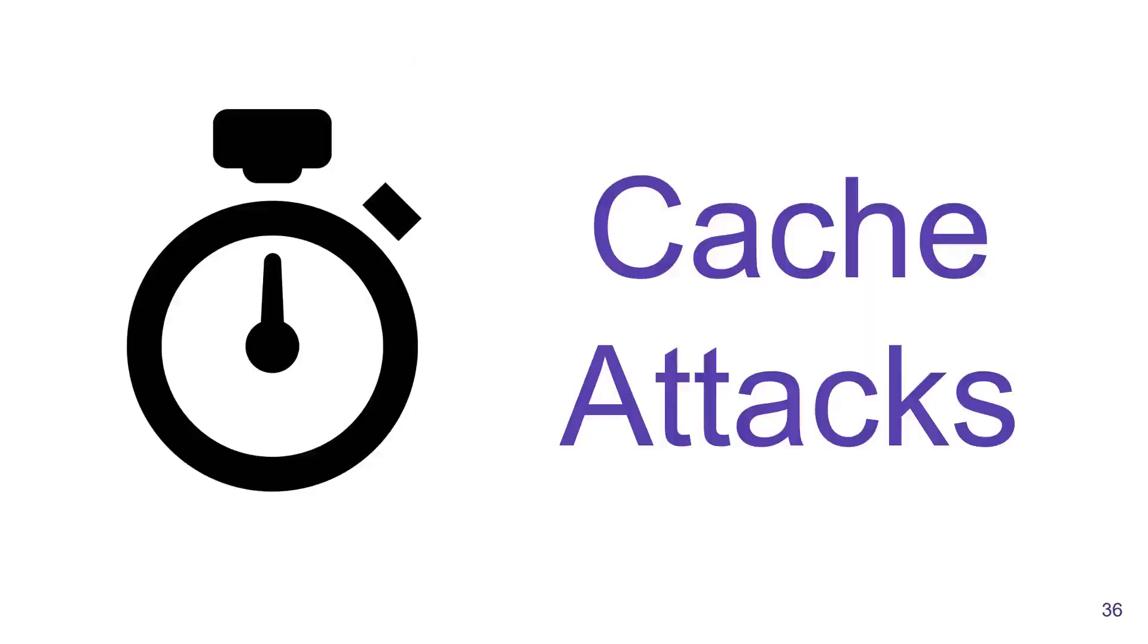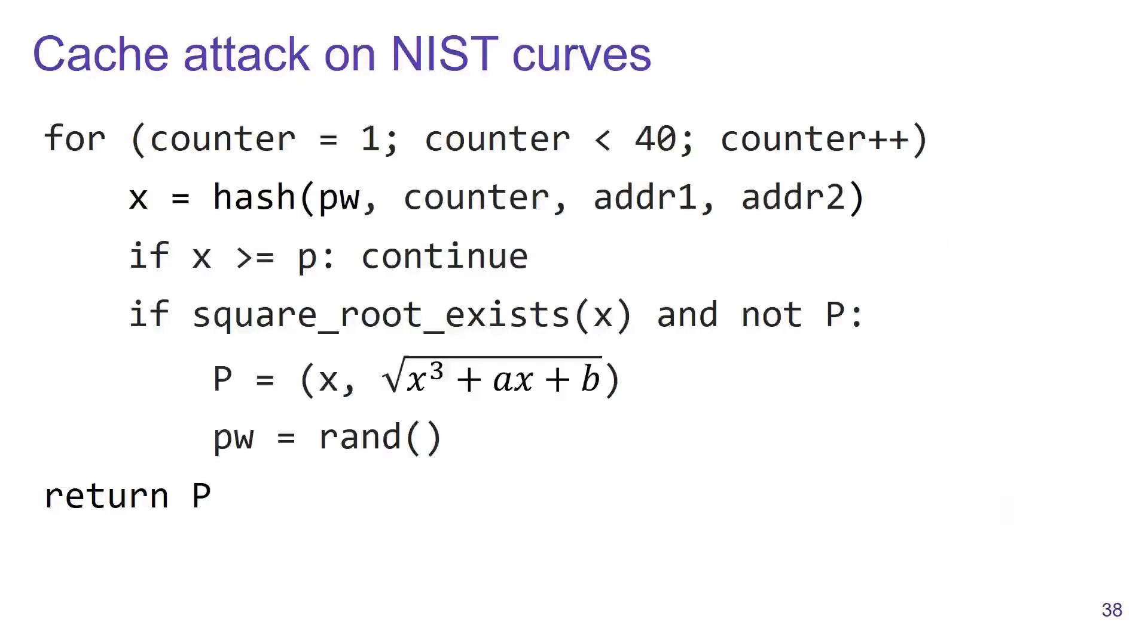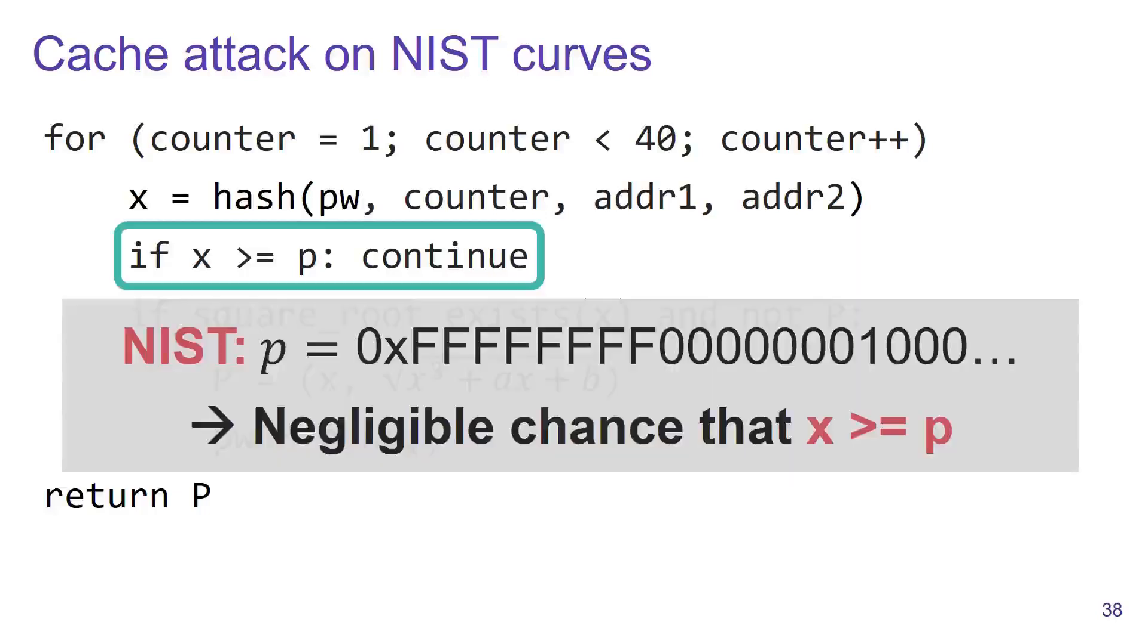Apart from timing attacks, we also discovered cache attacks against implementations. These attacks are executed by setting up a malicious access point and tricking clients into running unprivileged code. This can for example be an unprivileged Android application.